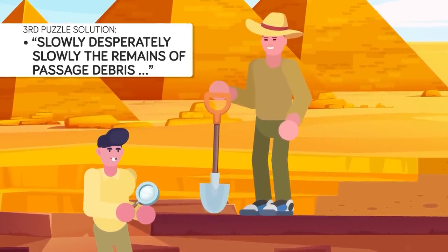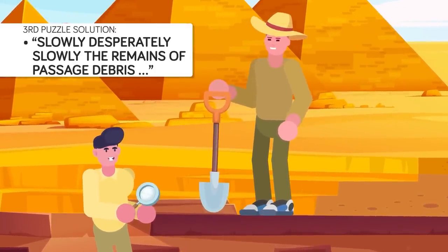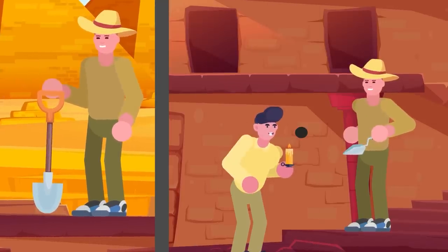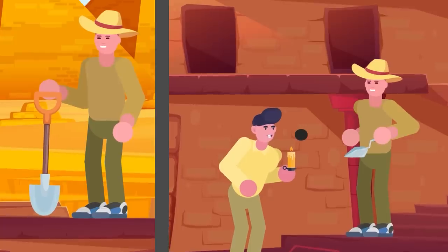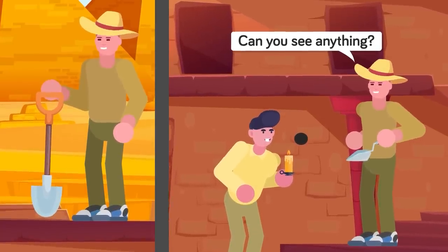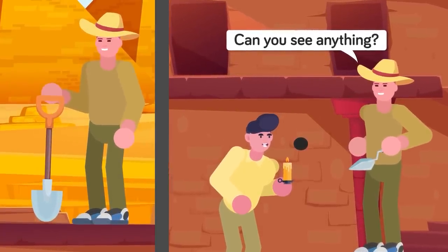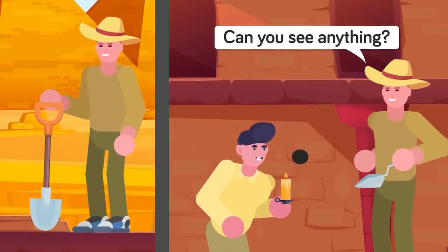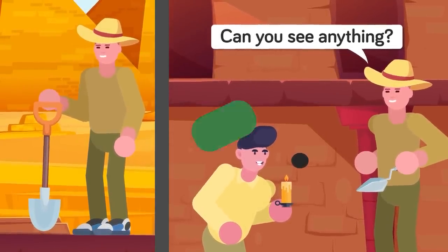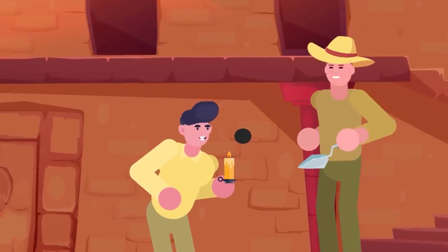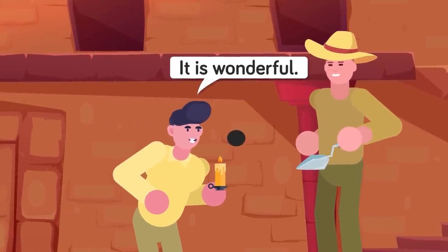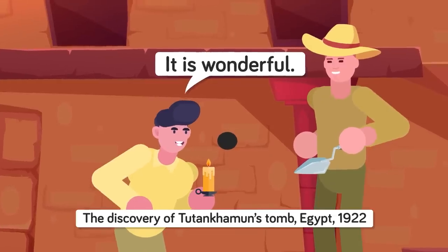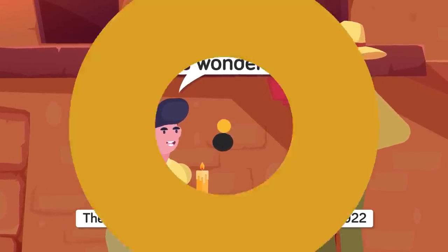Slowly, desperately slowly, the remains of passage debris that encumbered the lower part of the doorway was removed. With trembling hands, I made a tiny breach in the upper left-hand corner, and then, widening the hole a little, I inserted the candle and peered in. The hot air escaping from the chamber caused the flame to flicker, but presently details of the room within emerged from the mist. X, can you see anything, Q? What's all that about, you might ask? The answer is, it relates to a question that was asked by a British archaeologist when the tomb of Tutankhamun was opened in 1922. The reply to the answer was, it was wonderful.